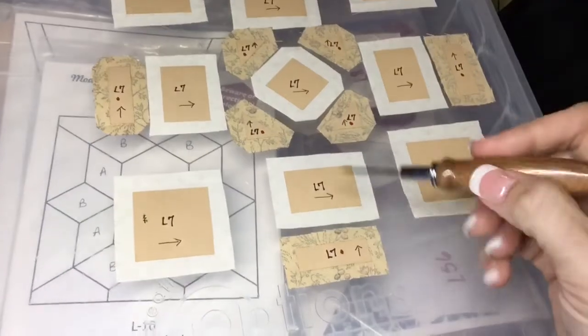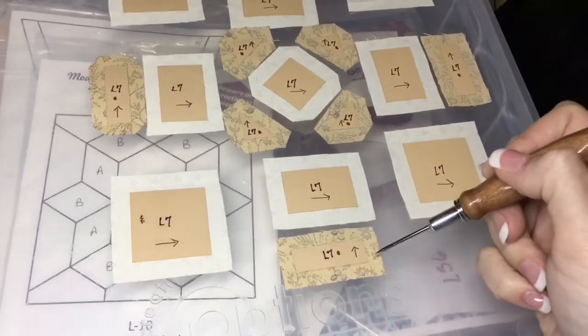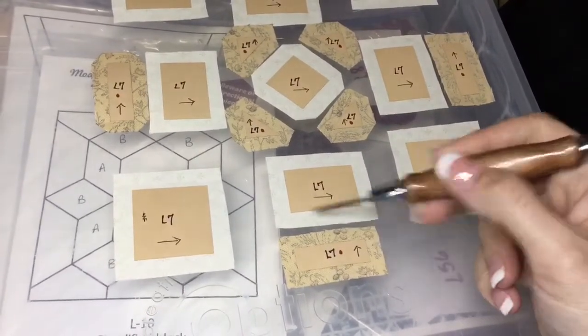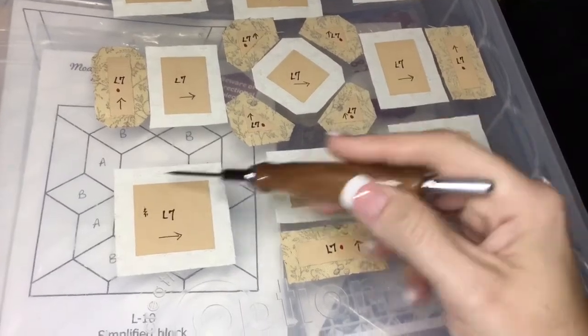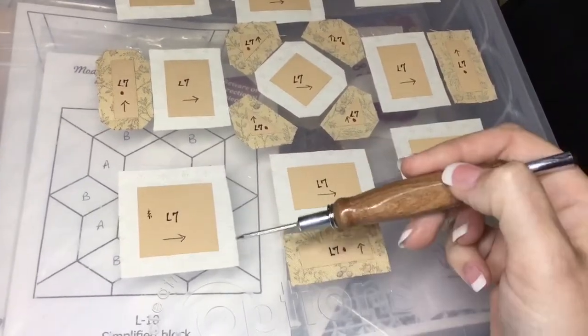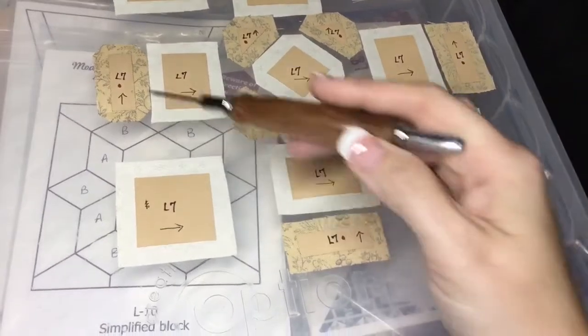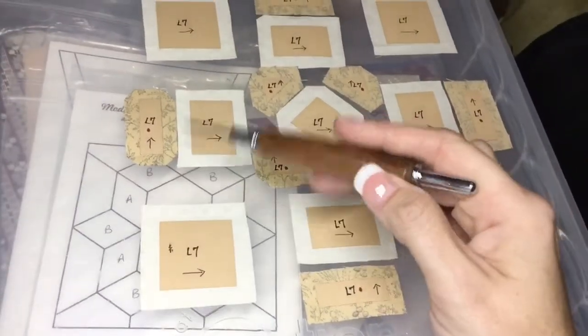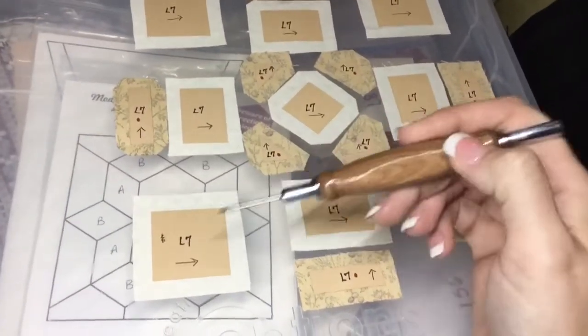For the bottom row, I'm going to baste the short sides of the rectangles first, then the long sides. Then I'm going to do the tops of these squares so that they're opposite of this, but it doesn't matter which way I do it.